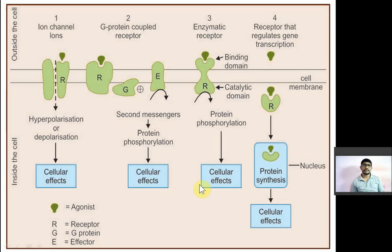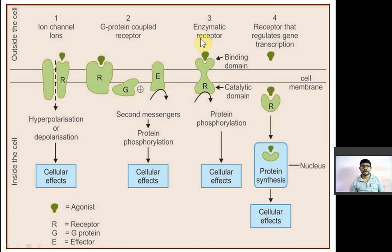Now you can see in this slide there are four types of receptors. This region is known as outside the cell and this region is inside the cell. Now, what are the different types of receptors present? The first type of receptor is known as ion channels, also known as ionotropic receptors.